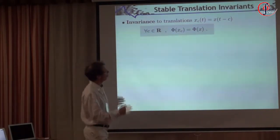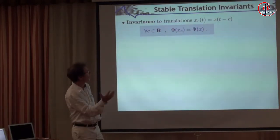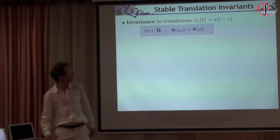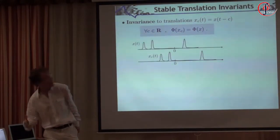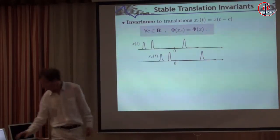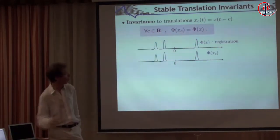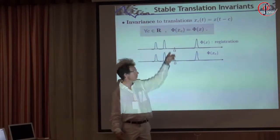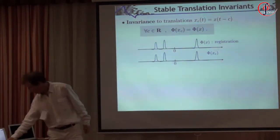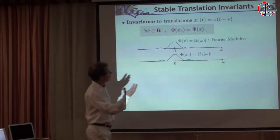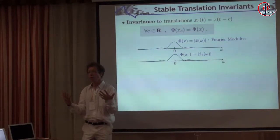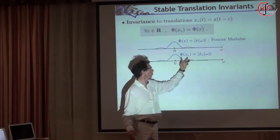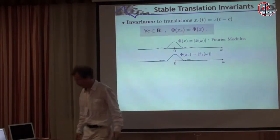So, let me look at invariants to translation. You have a signal x, a function that should translate x, and if you want a representation which is invariant to translation, the representation shouldn't depend upon the position variables. There are many ways to do that. The simplest canonical invariant performs a registration — for example, you center the center of gravity, the center of mass of your function. The second obvious way is to use the Fourier transform: if x is translated, you just have a change of phase, and if you kill the phase with the modulus, you get something invariant. So the modulus of the Fourier transform is an invariant representation to translation.